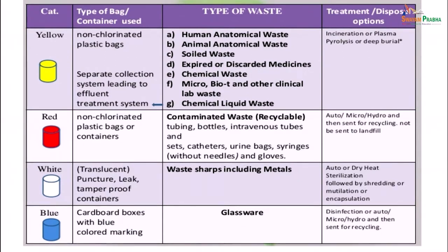As far as the red bag is concerned, it is again a non-chlorinated plastic bag or container used to collect contaminated waste which is recyclable — that is glass tubings, bottles, IV tubes and sets, catheters, urine bags, syringes, and gloves used in the hospital. They need to be autoclaved, microwaved, or hydroclaved and then sent for recycling. White containers should be translucent, puncture-proof, leak-proof or tamper-proof, and are used to collect waste sharps including metals. They need to be autoclaved or dry heat sterilized, followed by shredding, mutilation or encapsulation so that they cannot be reused. Blue bags are usually cardboard boxes with blue-coloured markings, used to collect glassware. They are disinfected, autoclaved or microwaved and then sent for recycling.